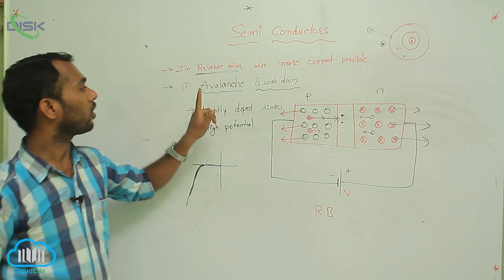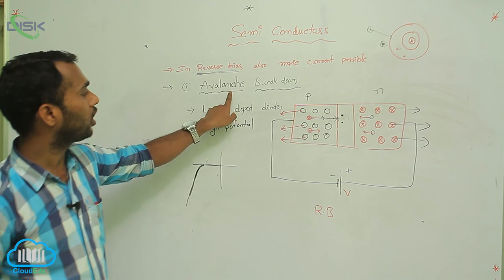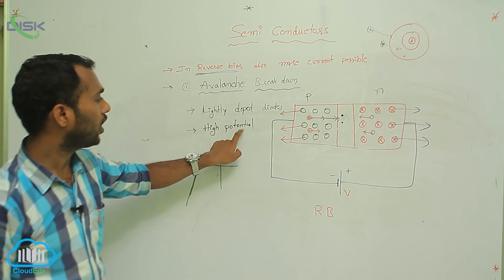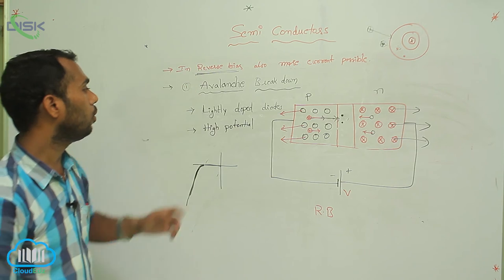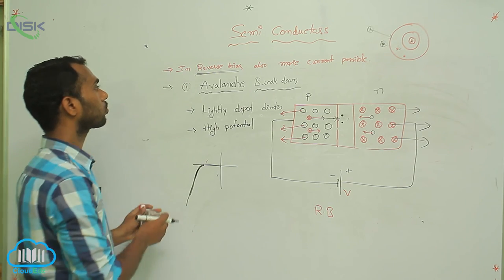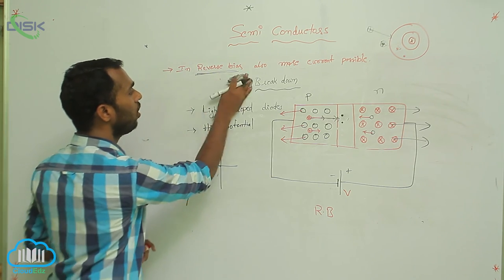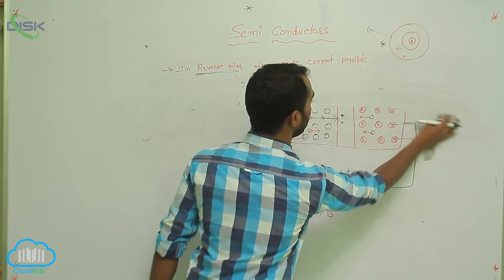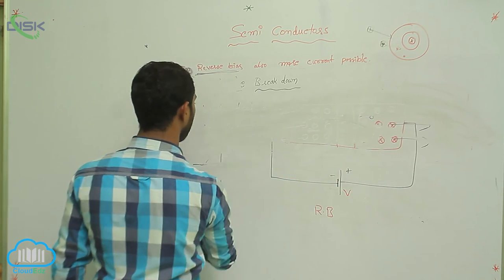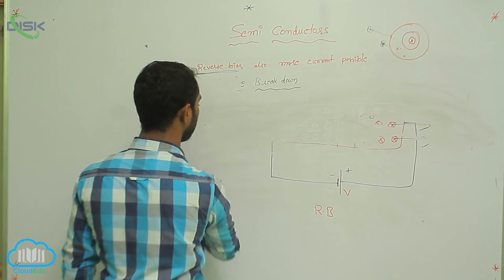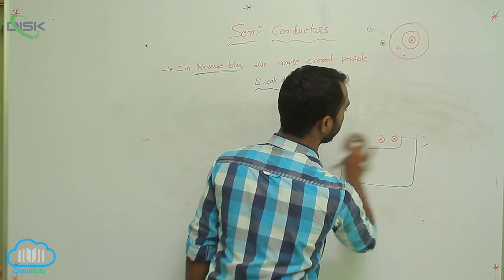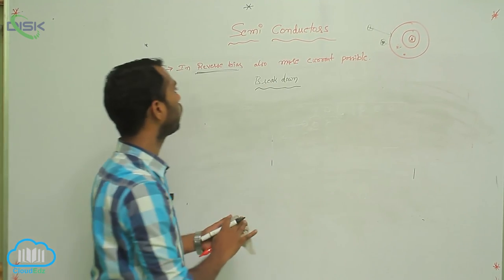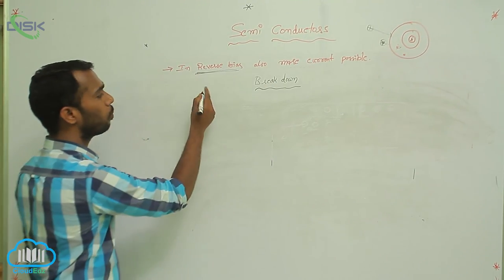What is the condition for avalanche breakdown? The diode must be lightly doped and we have to apply more and more potential. Next, we have to go for Zener breakdown. Zener breakdown also occurs in reverse bias — we need to check what happens in that case.